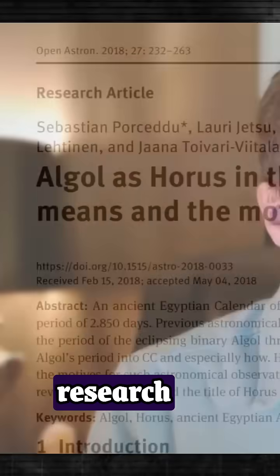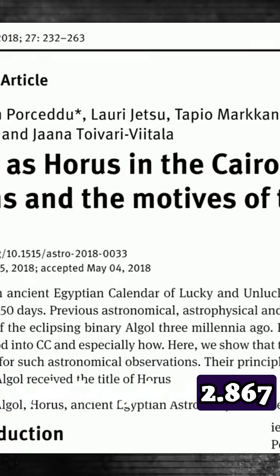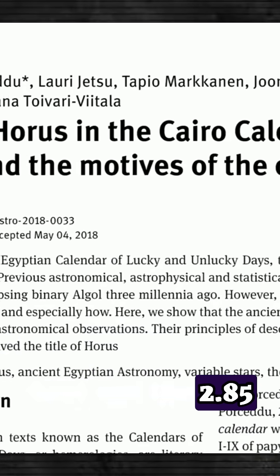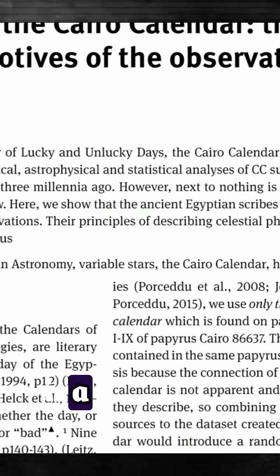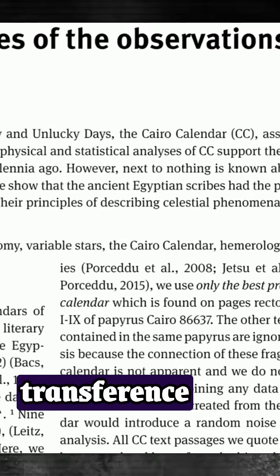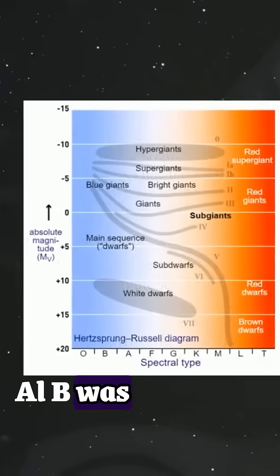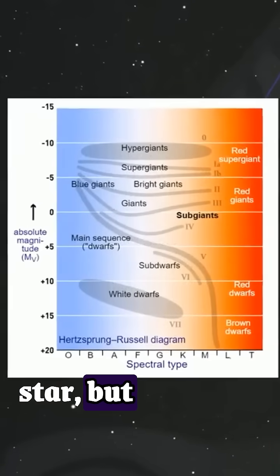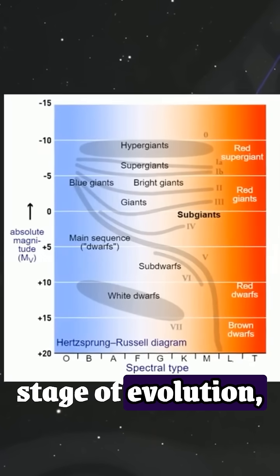However, recent research has revealed that the gap between the current cycle length of 2.867 days and the 2.85 day cycle originally documented by ancient Egyptians is the result of an ongoing mass transference from Algol B to Algol A. Algol B was originally a more massive star, but due to its size advanced to a later sub-giant stage of evolution much sooner.